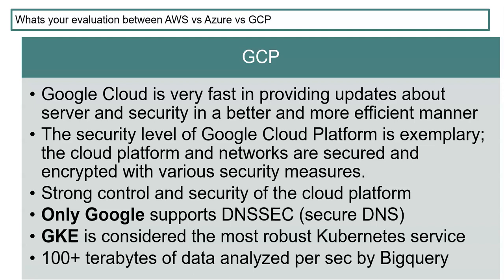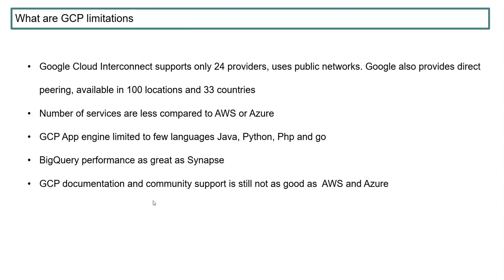Only Google supports DNSSEC, whereas Azure and AWS support only DNS — not DNSSEC — which is a strong security feature not available with others. GKE is considered the most robust Kubernetes service because Kubernetes was built by Google. Additionally, BigQuery can analyze 100+ terabytes of data per second, which is another major advantage if you're moving any archival or big data related projects to GCP. There are plenty more real-time questions in these slides which I will cover in the second part — thanks for watching.